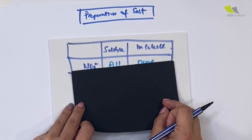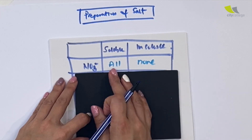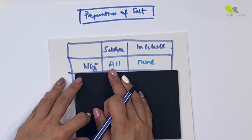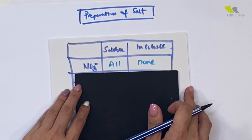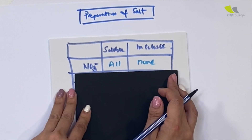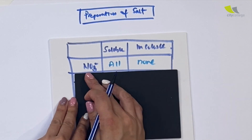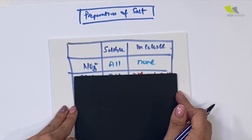First up, you have your nitrates. All nitrates are soluble. Any insoluble? None. There's always a song that I sing: all nitrates are soluble.